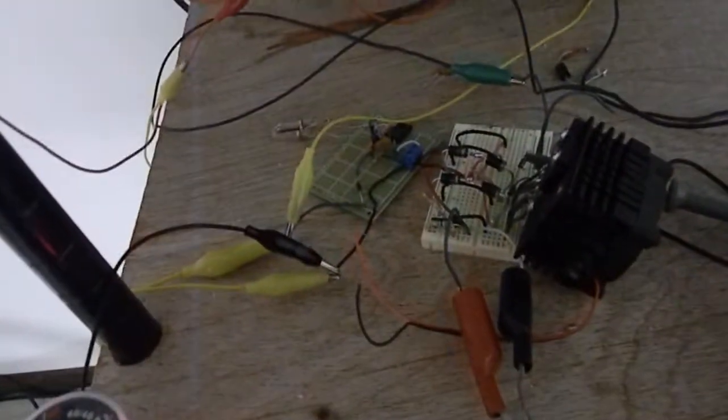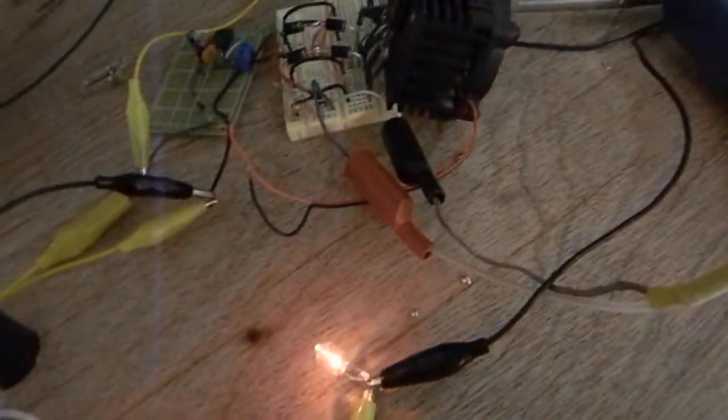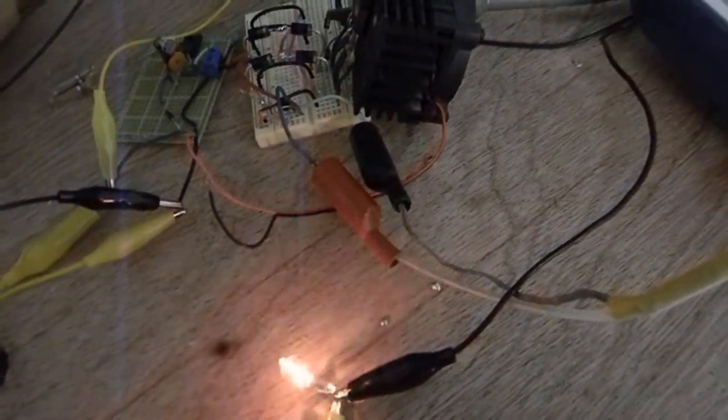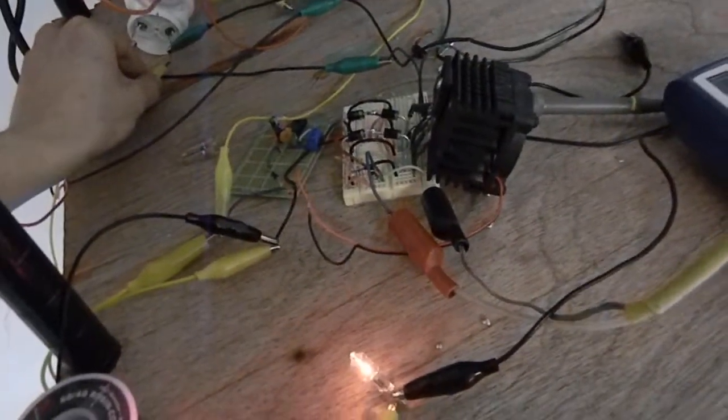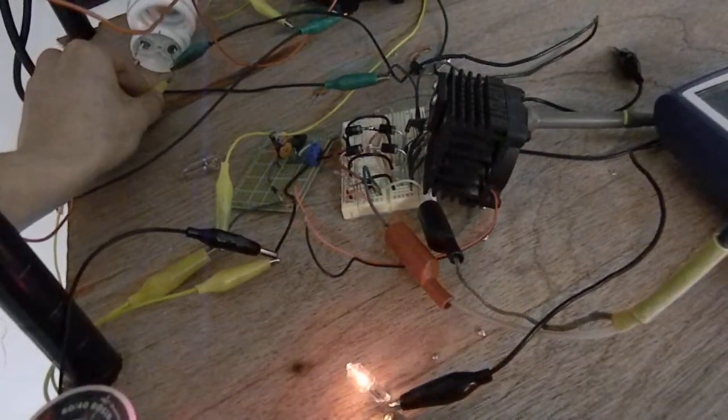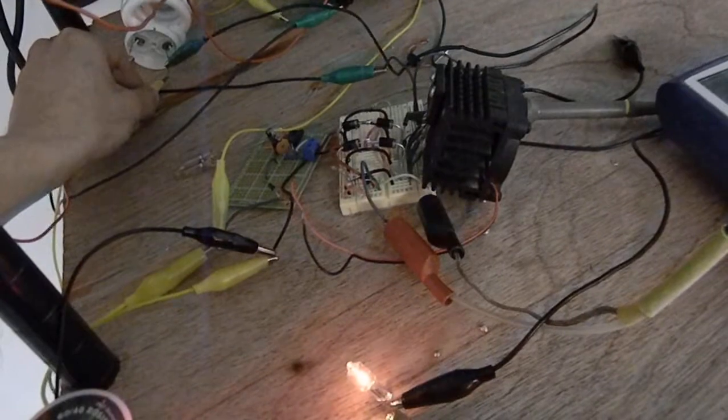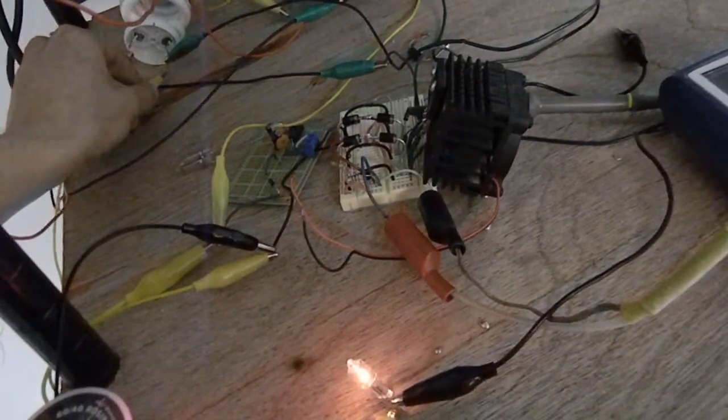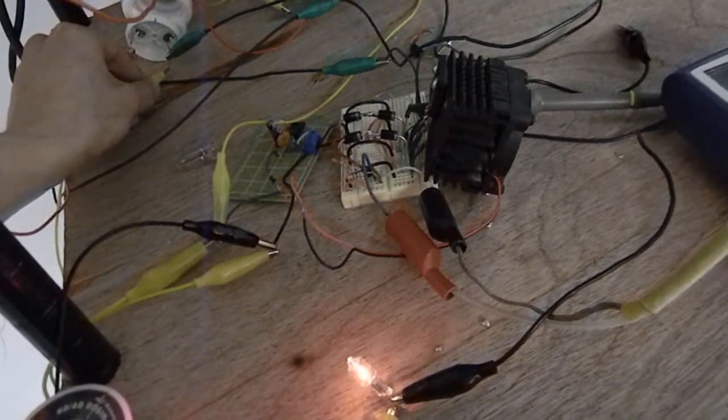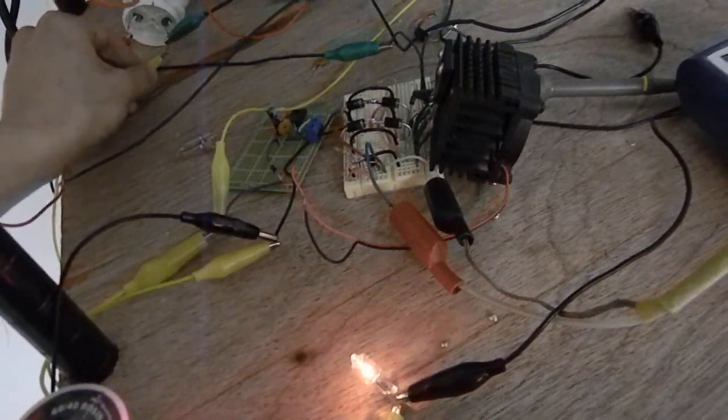And then if we hook up our bulb, when a spark happens over here, you can see our bulb gets brighter too. It's really hard to get a spark to happen because the voltage isn't that high.